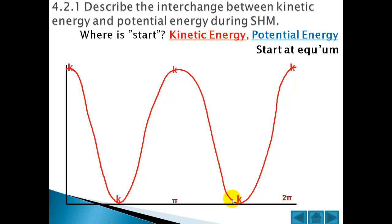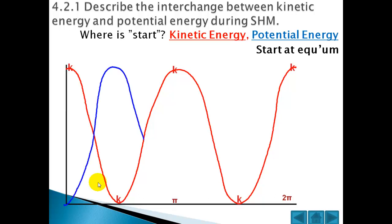What about the potential energy? If we take the initial point here, the kinetic energy is at a maximum and the potential energy will be zero. This is when we're in the middle of the oscillation at the equilibrium point, and it has no potential energy. It gets its potential energy at the extreme values — this is when the kinetic energy is zero. So the potential energy graph will look like this.